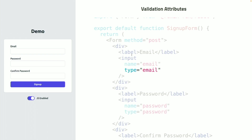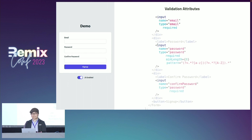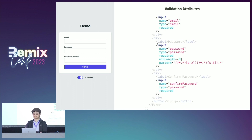These attributes let us define constraints based on different use cases. For example, we can mark an input as required with the required attribute. We can also enforce the password policy using the minlength and pattern attributes.